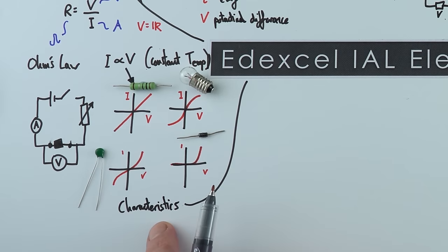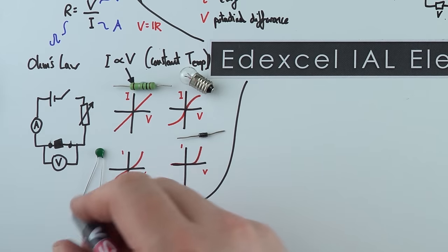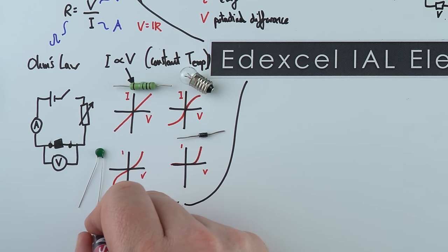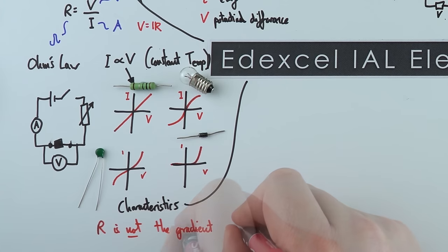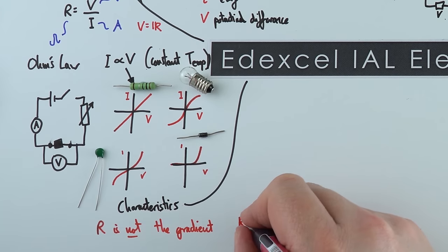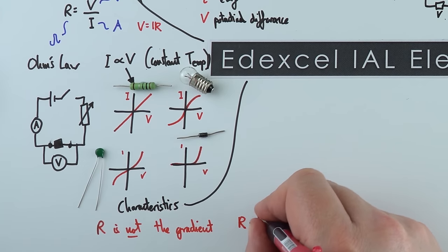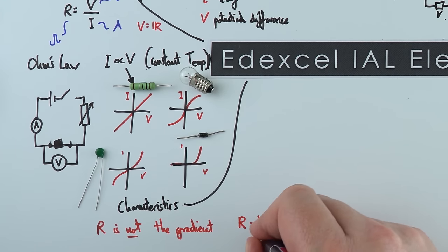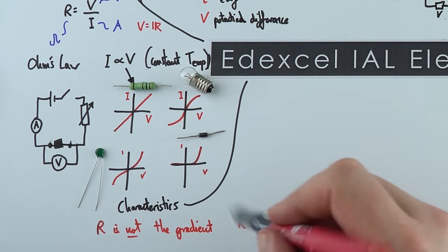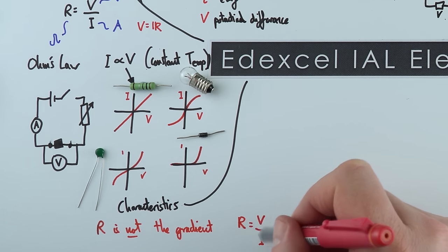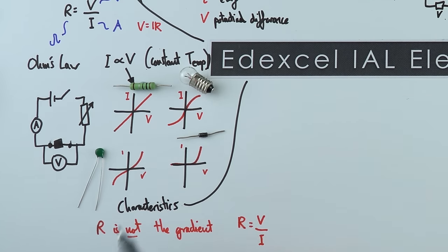An important point about these characteristics: the resistance is not the gradient of the I-V graph. You simply find the value of the potential difference and the value of the current at a point, and R equals V/I gives you the resistance. It is not dV/dI, so the resistance is not the gradient — that is really important to remember.